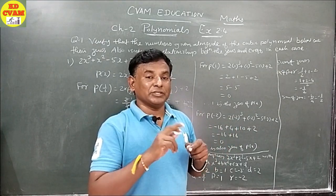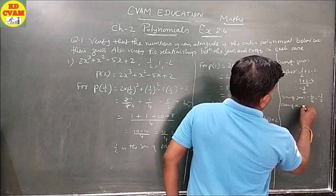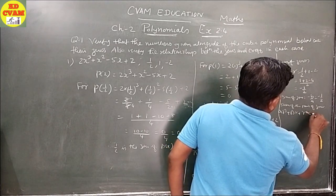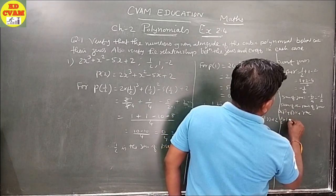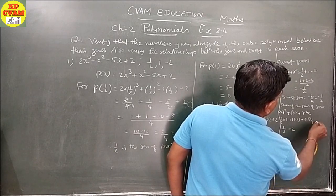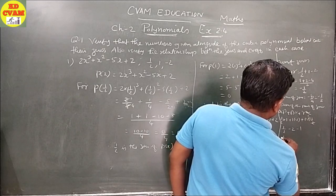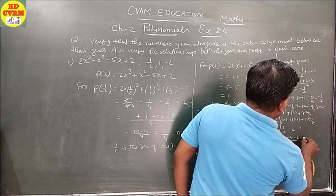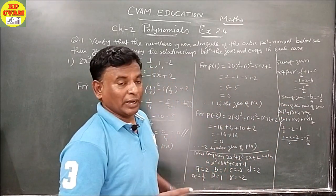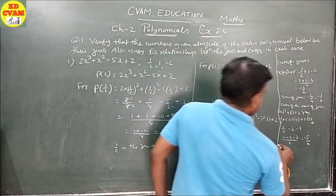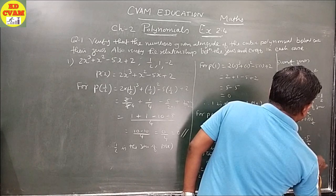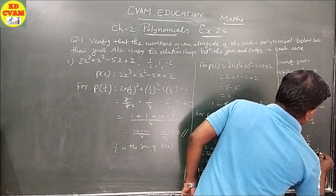Sum of pairs of zeros: alpha·beta + beta·gamma + gamma·alpha = (1/2)(1) + (1)(-2) + (-2)(1/2) = 1/2 - 2 - 1 = -5/2. As per the formula, this should equal C/A = -5/2. This is also verified.